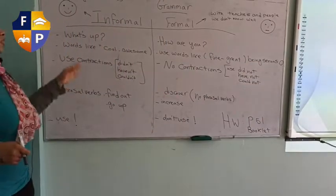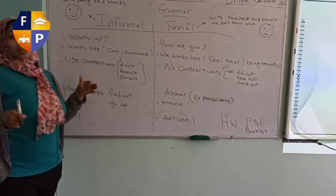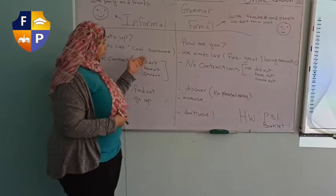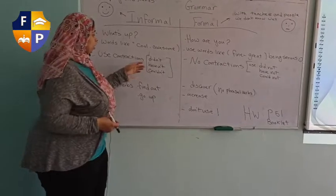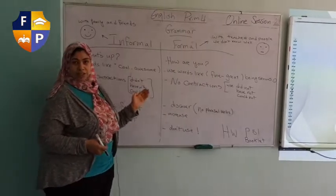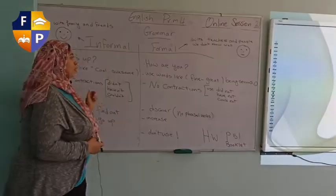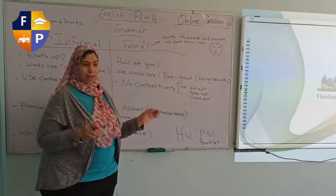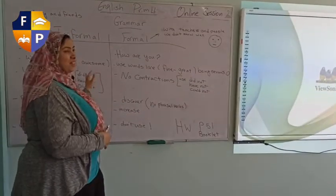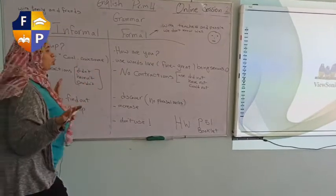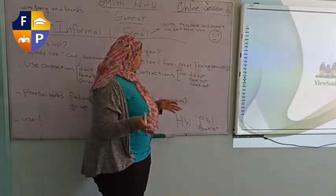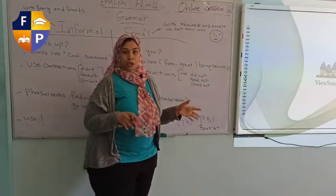In the informal language we can use contractions. What are contractions? Contractions are like these words: didn't, haven't, couldn't, can't. But in the formal language, whether we say or write, you cannot use didn't, haven't, couldn't — no contractions. You say: did not, cannot, have not, could not.